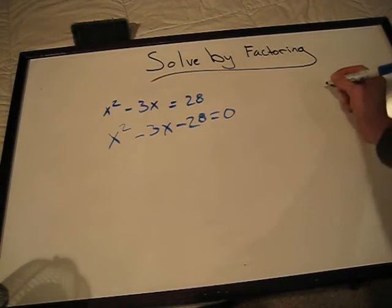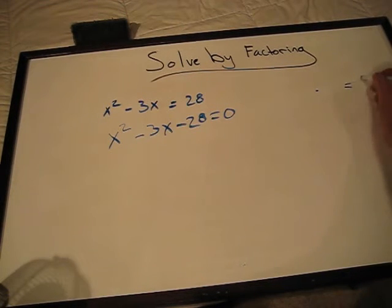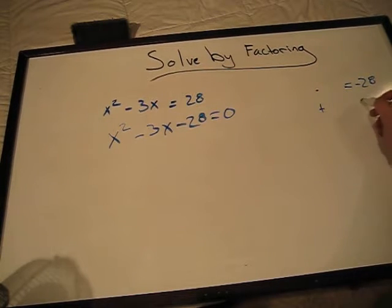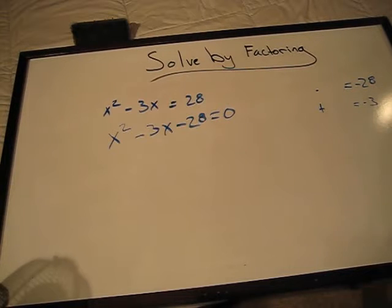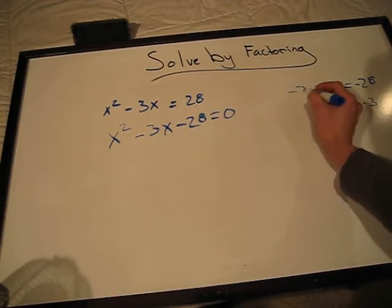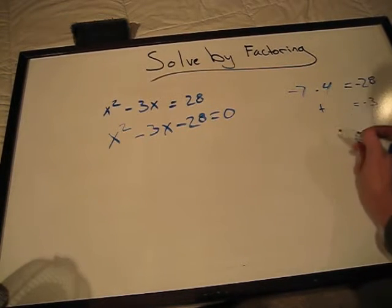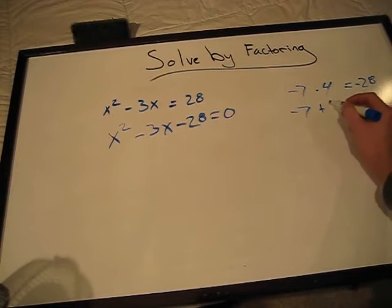Now we need to find two numbers that multiply to -28 and add to -3. Those two numbers are -7 and 4.